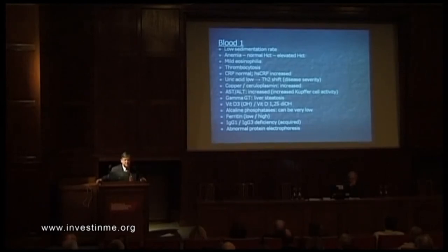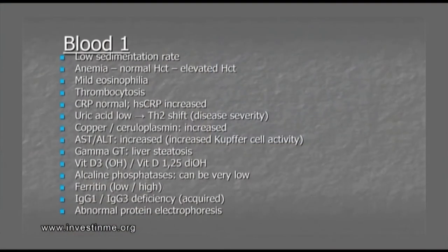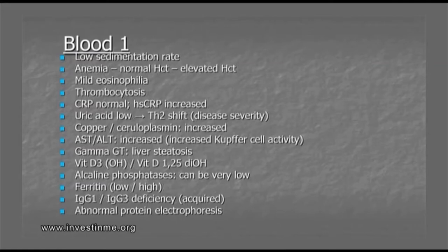I see in 70% of my patients where I measured it that copper and ceruloplasmin are increased. These patients do not have Wilson's disease because the ceruloplasmin is increased, but they have a gradual increase in copper load in the body. Normally the red blood cells do the major uptake of copper, and there seems to be something wrong with that uptake. AST/ALT can be increased without gamma-GT, and increased AST/ALT can also point to immune activation.